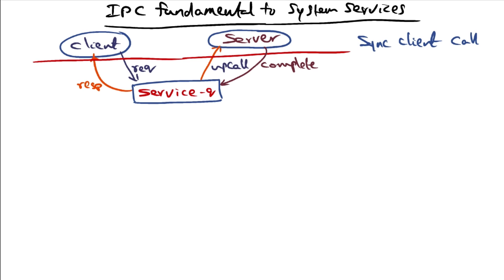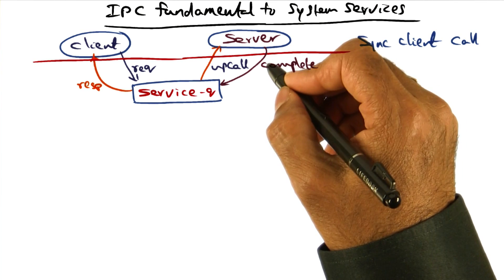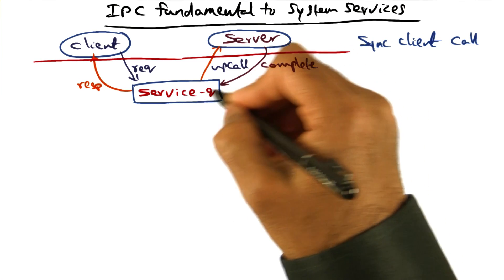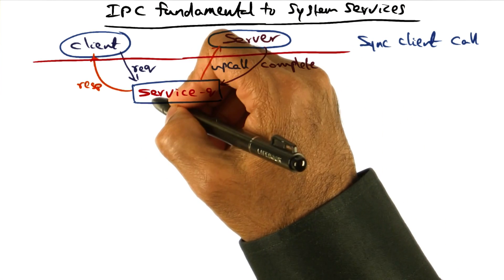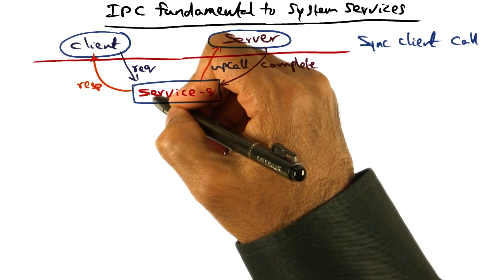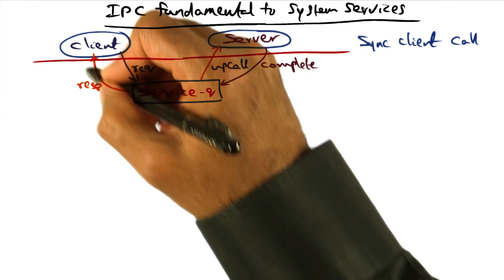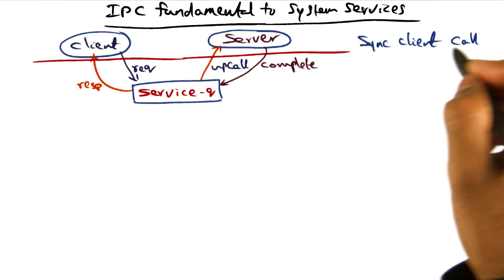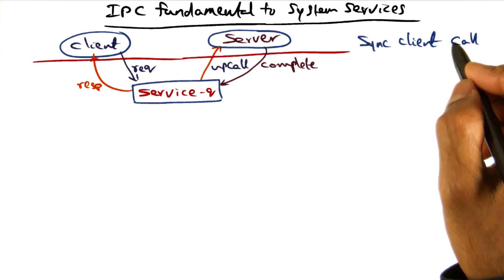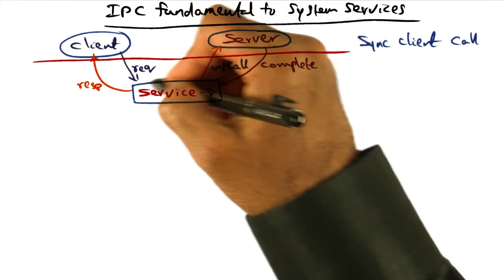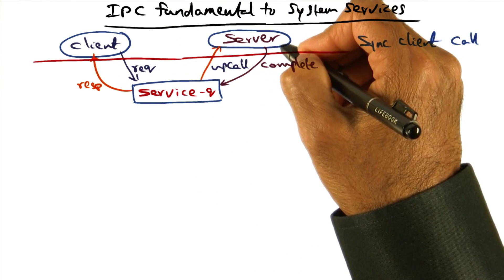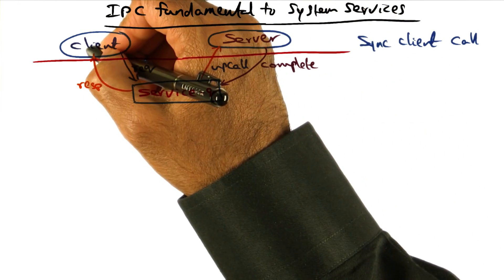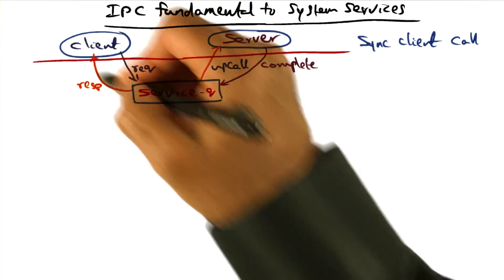The server executes the upcall associated with this particular request. When it completes the request, the completion goes back into the service queue, and that is an indication for the kernel to give the response back to the client. So there is a synchronous client call where the client is waiting until the request is actually serviced, and the completion response comes back to the client.